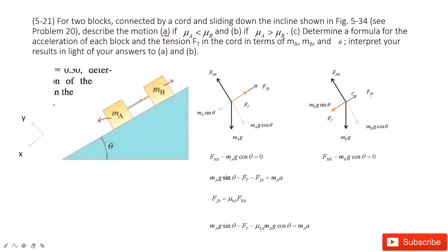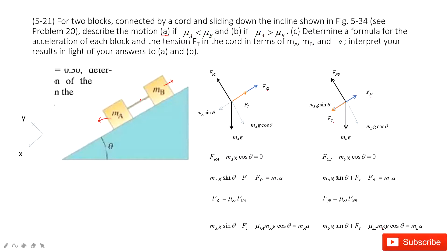For object B in the y-component: normal force minus gravity equals zero. In the x-component: M_B·g·sinθ plus tension minus friction equals mass times acceleration. The friction for B equals the coefficient times the normal force. In these two equations, the masses, angle θ, and coefficients are all given, so you can find the tension and acceleration easily.